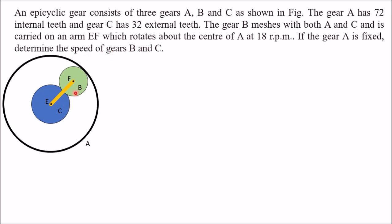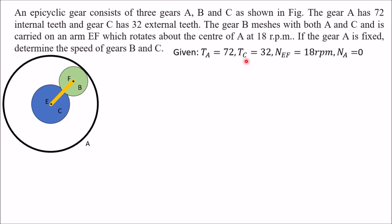We have to determine the speed of gears B and C. Given data: number of teeth on A is 72, number of teeth on C is 32, speed of arm is 18 RPM, and speed of the annulus equals 0.